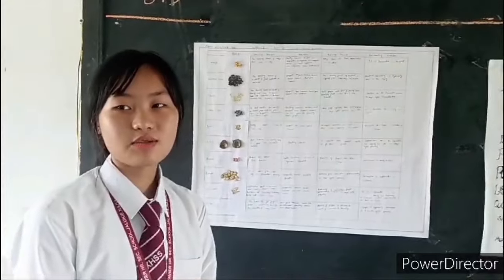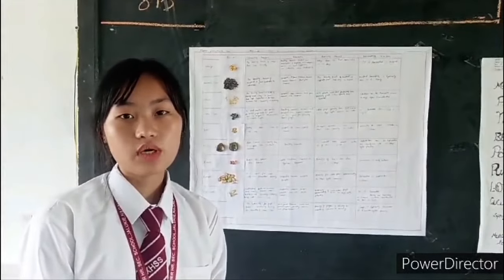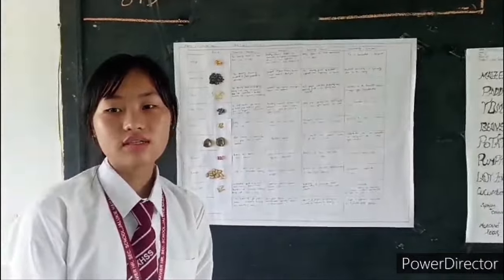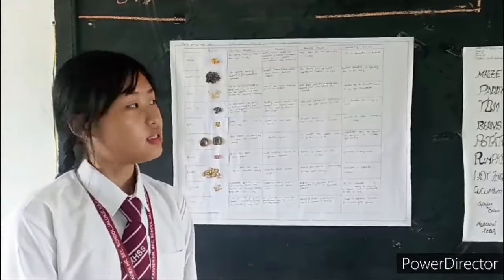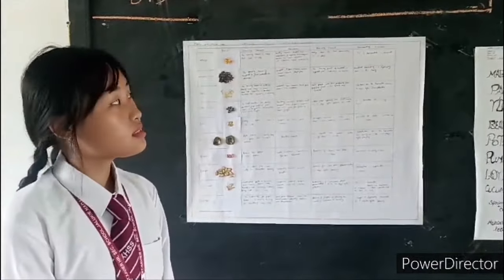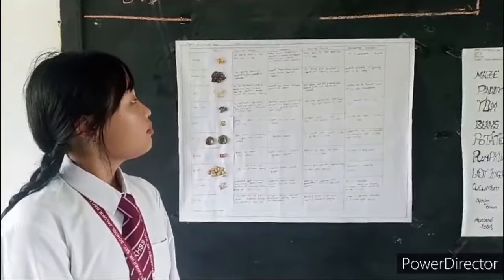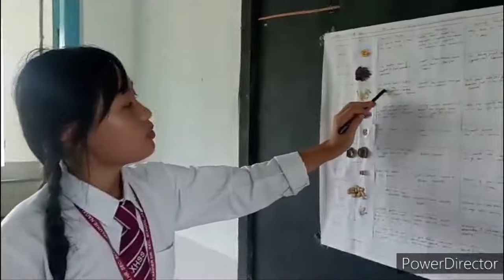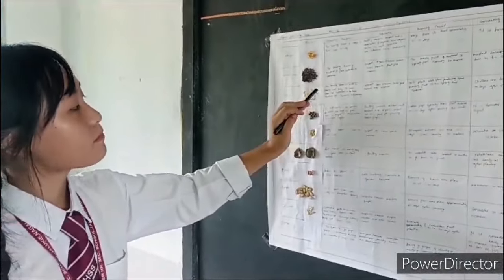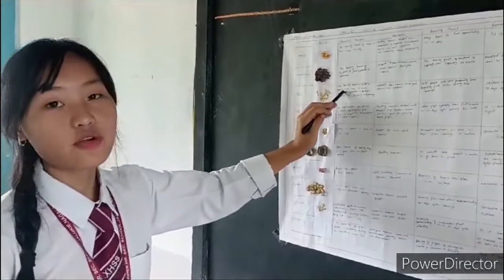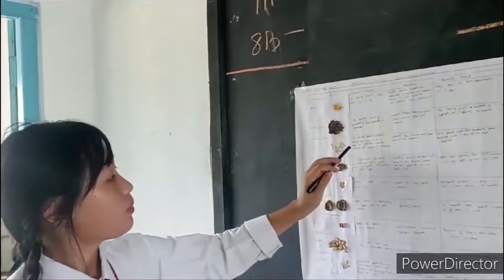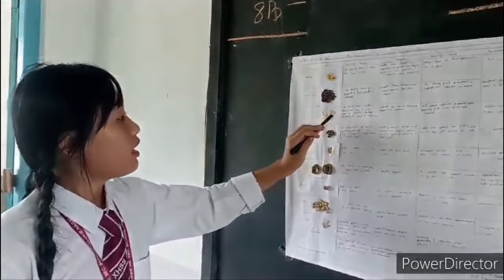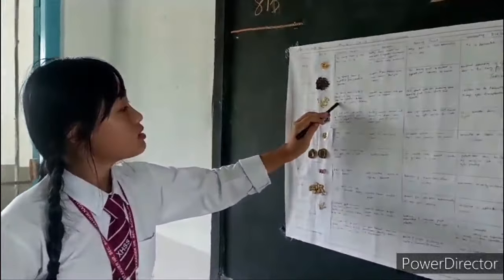Good morning everyone. My name is Amanda and I'll be talking about the different crops of Nagaland. Different crops grown in Nagaland are characterized by sowing season, manure required, bearing fruits, and harvesting season. We have two crops: Kharif crop and Rabi crop. The Kharif crop is sown from May to June, and the Rabi crop is also sown from May to June.